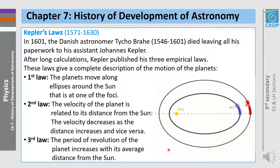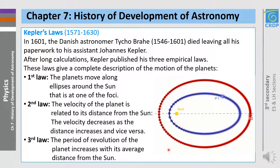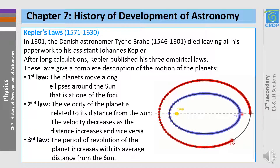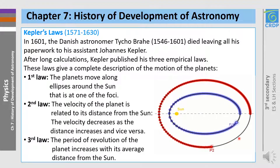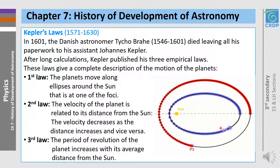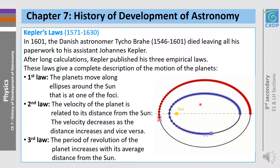Now for the third law: the period of revolution of the planet increases with its average distance from the sun. Looking at the blue planet, its period of revolution is smaller than the period of revolution of the red planet. At the same time, the blue planet is closer to the sun than the red planet. So the closer the planet, the smaller the period of revolution.